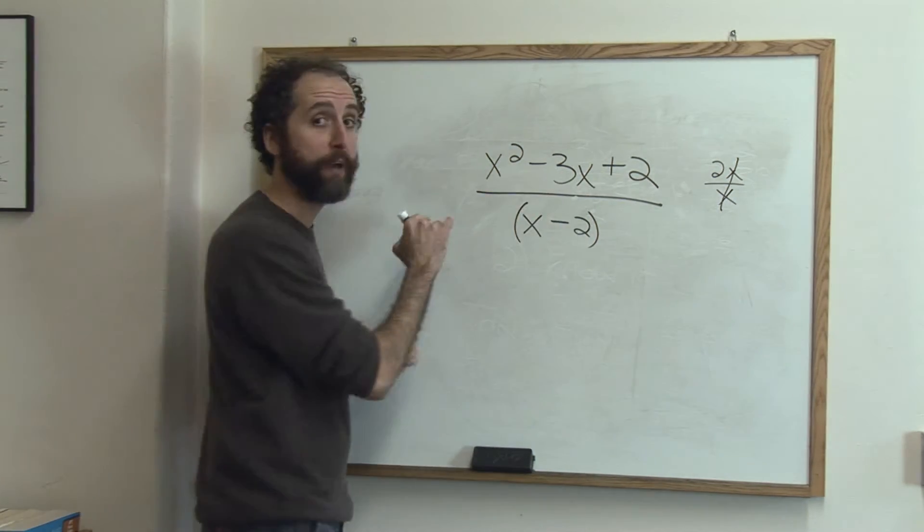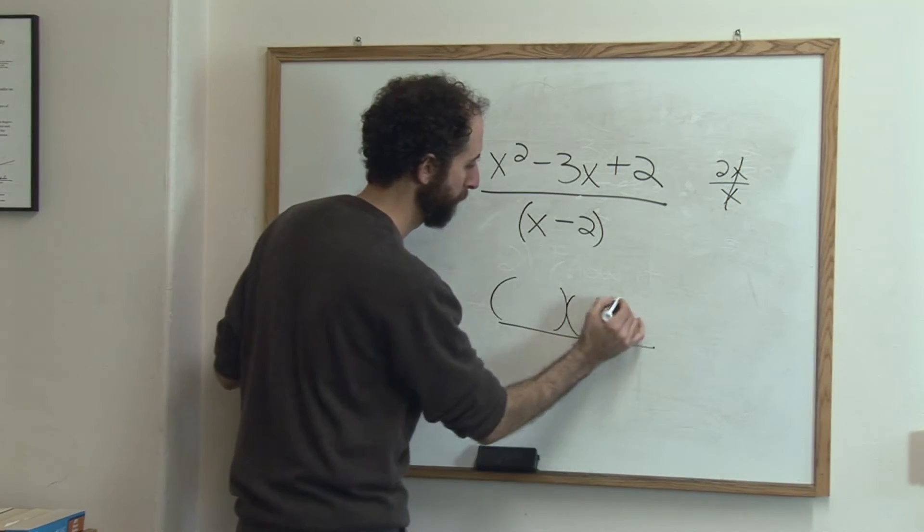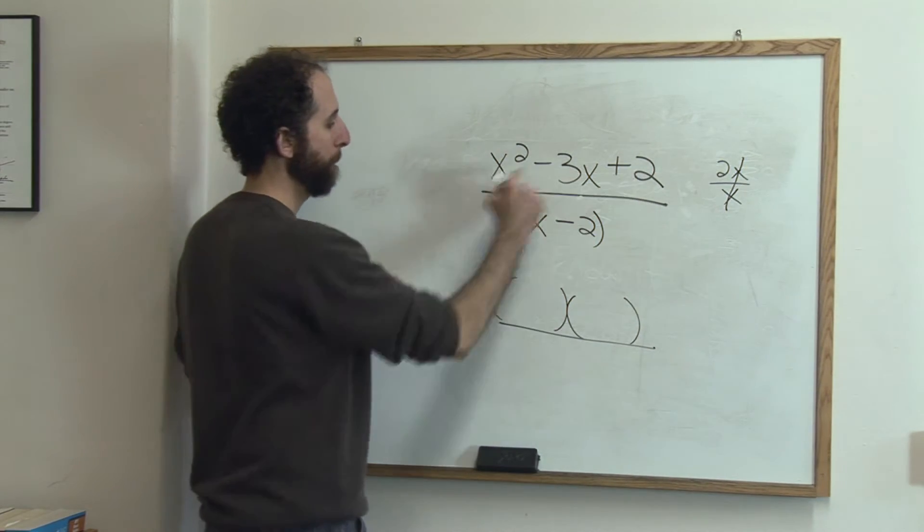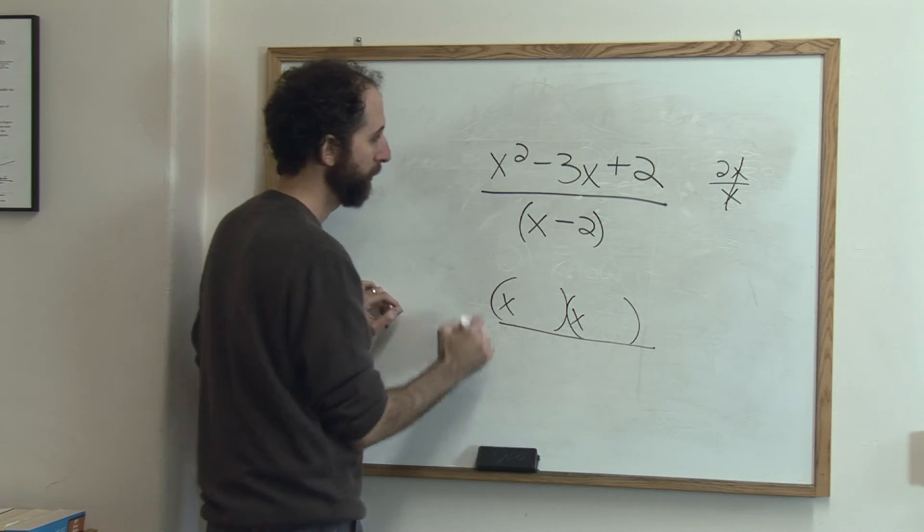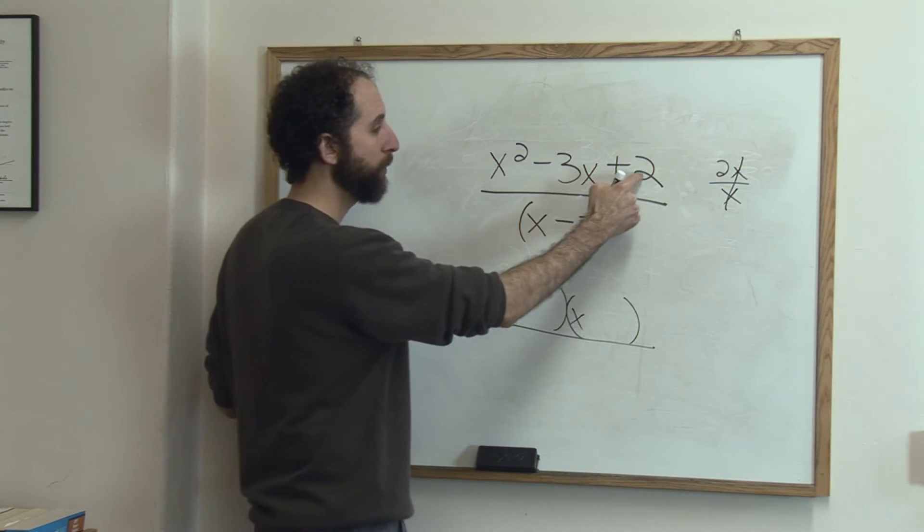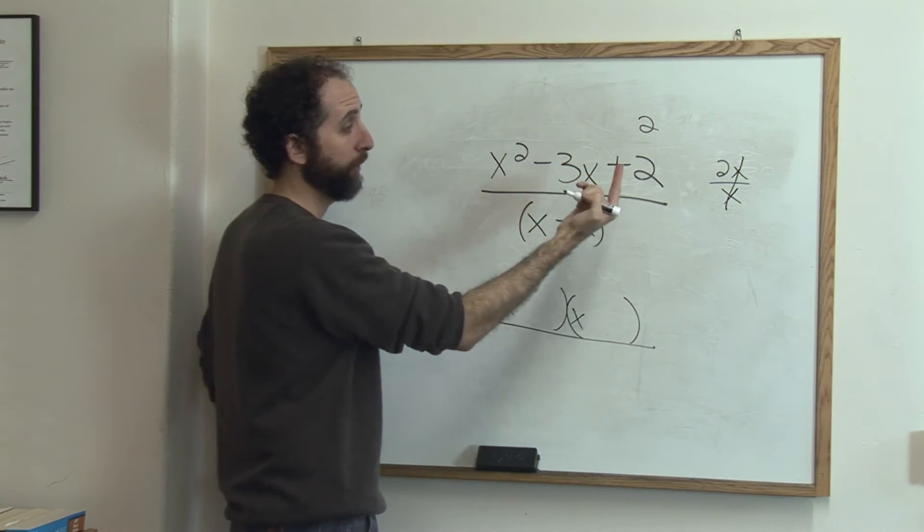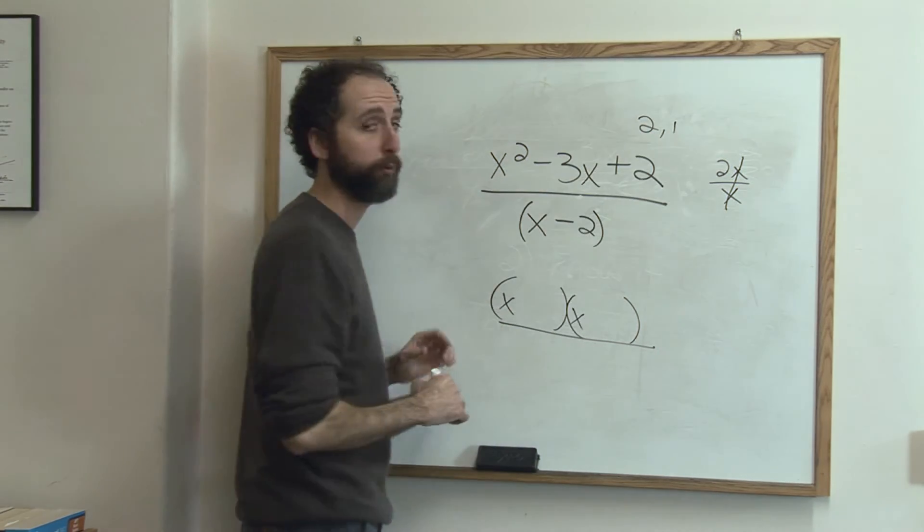So the top part can factor. The top part is going to become—we're going to factor x squared minus 3x plus 2. We're going to put an x here and an x here. We need two numbers that multiply to be 2 but add to be 3. The only options are 2 and 1—2 times 1 is 2.